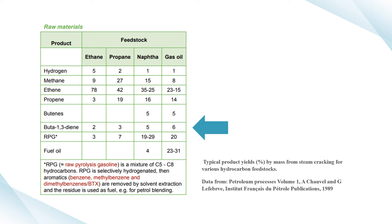This table shows the typical percentage product yields by mass from steam cracking for various hydrocarbon feedstocks, including ethane, propane, butene, naphtha, and gas oil. The products include butadiene. We can see that butadiene production is very low compared to others, but knowing that butadiene's market price and its applications are very outstanding, proper and good treatment of this product is very crucial.